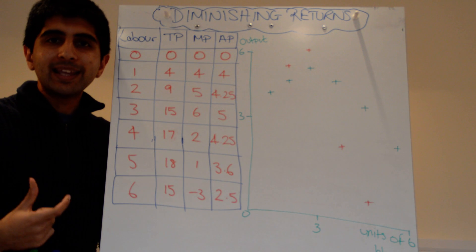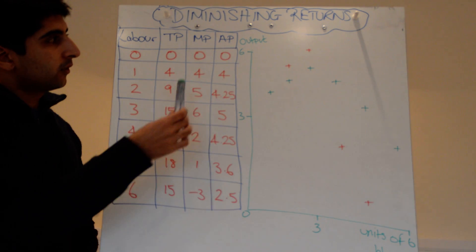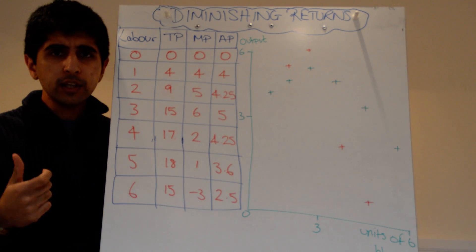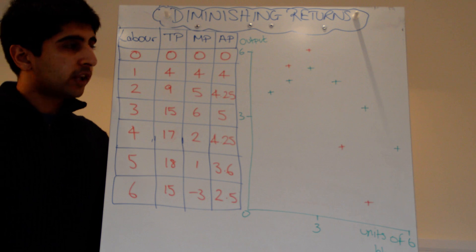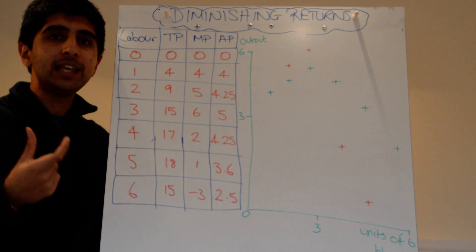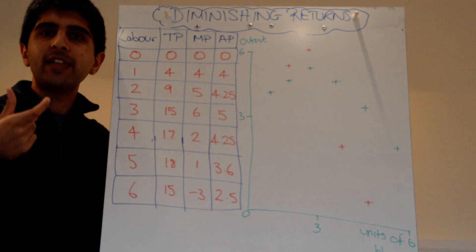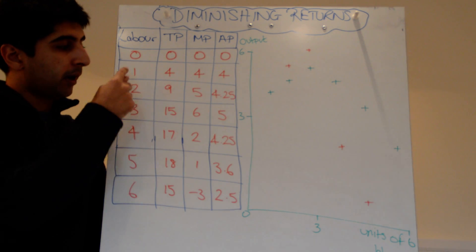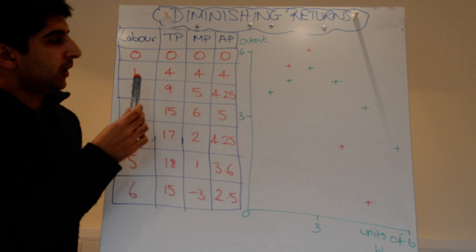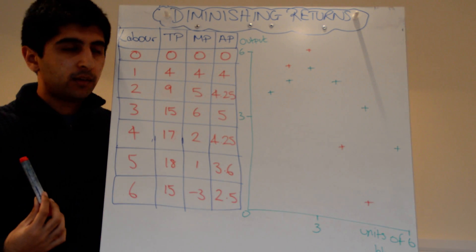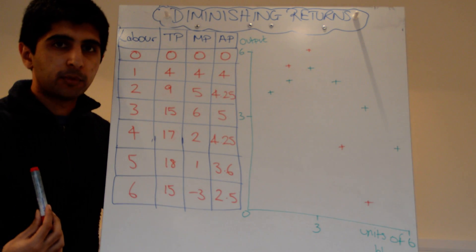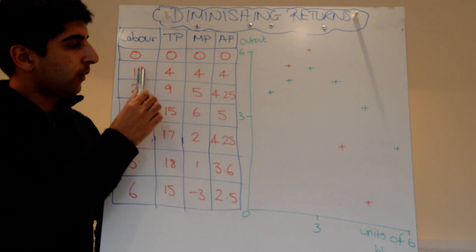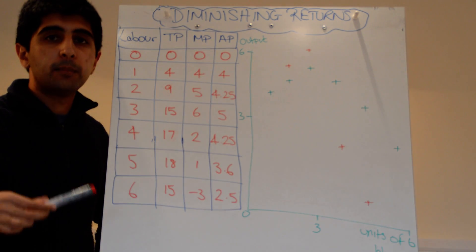With those figures, we can break them down into different concepts: marginal product and average product. In economics, 'marginal' simply means the extra — in this case, the extra units made by each additional worker. When we hired our first worker, that worker brought in four units from the previous round of zero, so the marginal product was four.